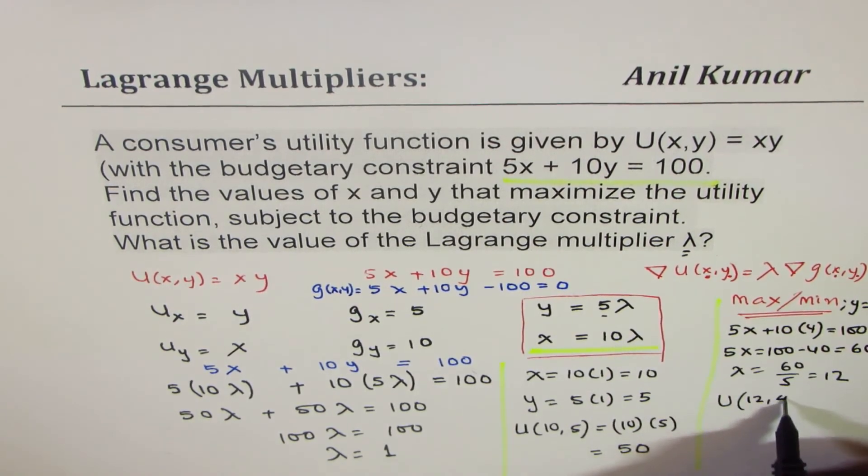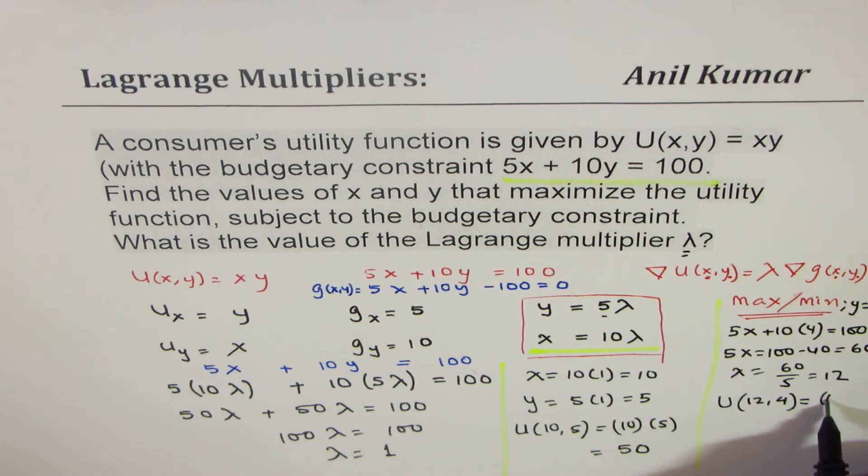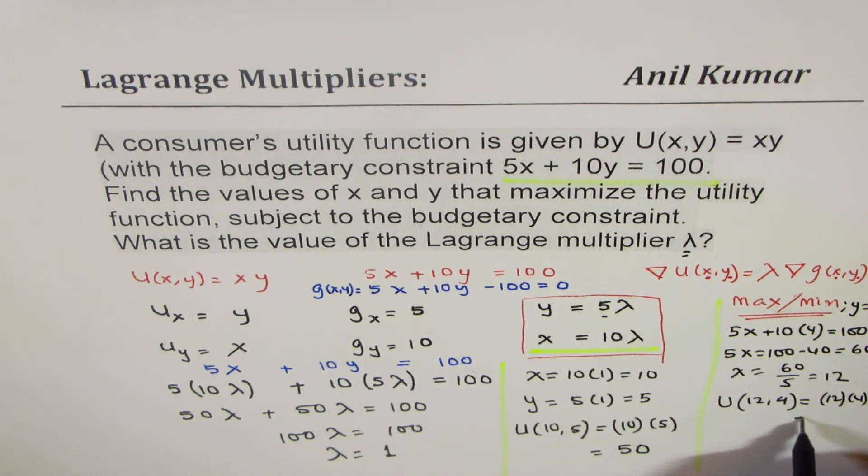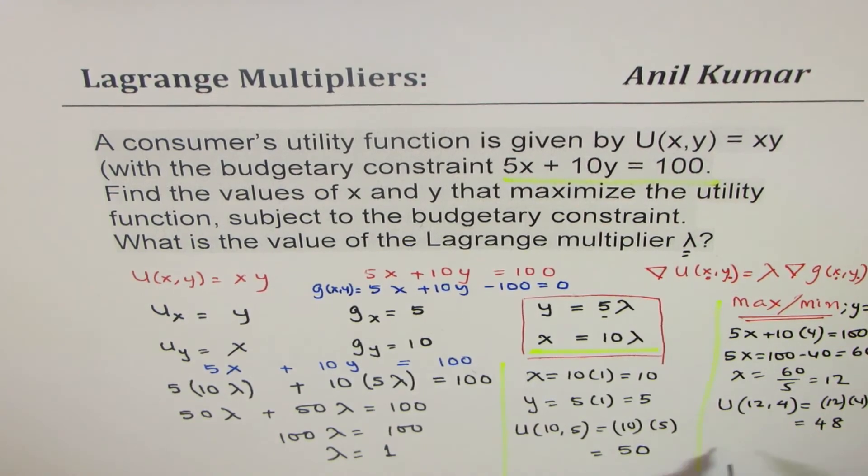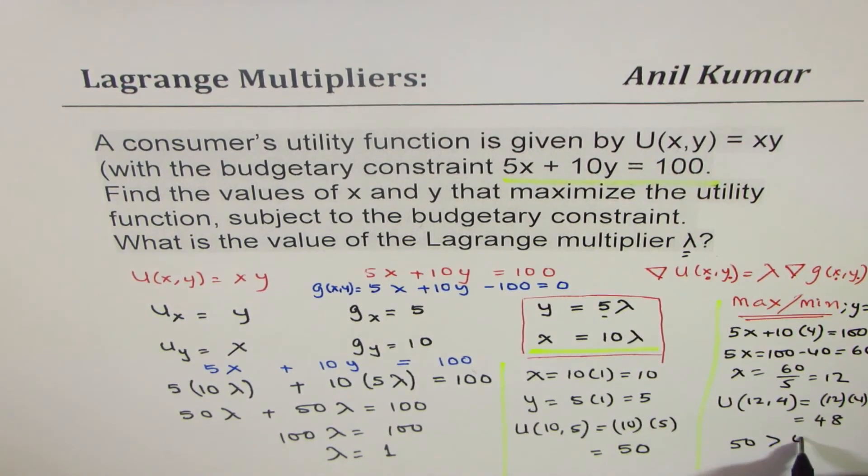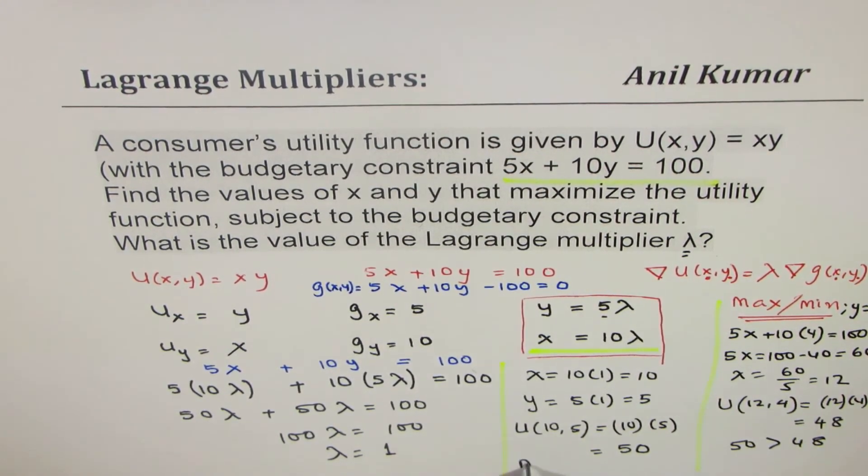So if I take the x and y values as 12 and 4, then what do we get? 12 times 4 as our utility value, which is 48. Now since 50 is greater than 48, we know this is the maximum value.